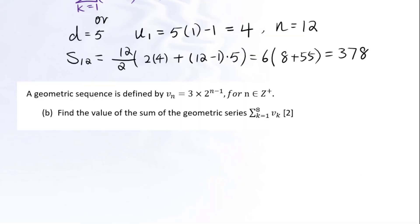Let's go to part B. A geometric sequence is defined by v sub n equals 3 times 2 to the power of n minus 1, for n being positive integers. Find the value of the sum of the geometric series: summation k from 1 to 8 of v sub k.